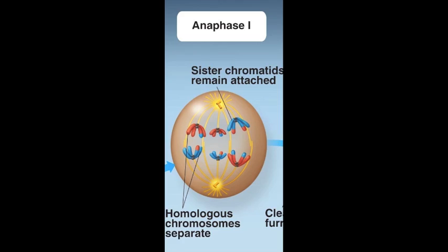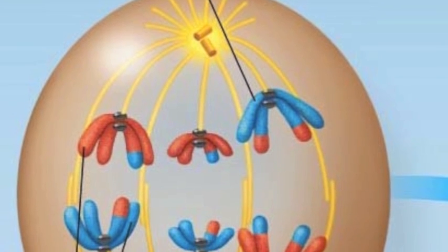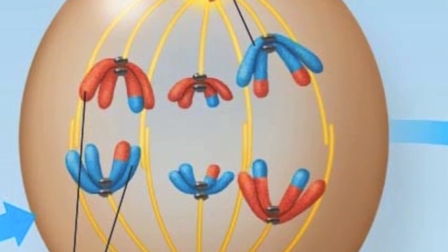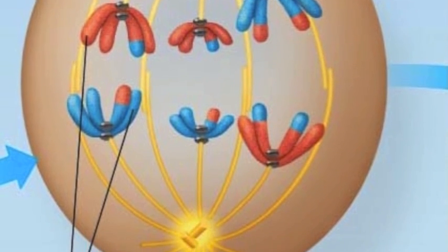The cell now enters anaphase 1 in which the tetrads are separated. Meiotic spindle guides each pair of sister chromatids to their respective pole. The sister chromatids move as one to their respective pole connected by a centromere.